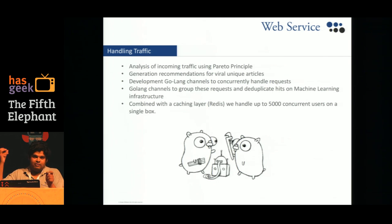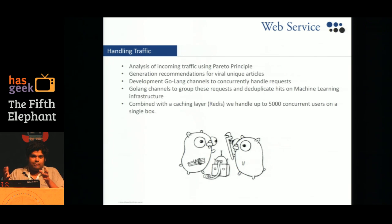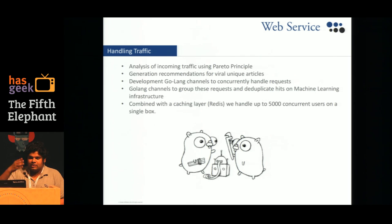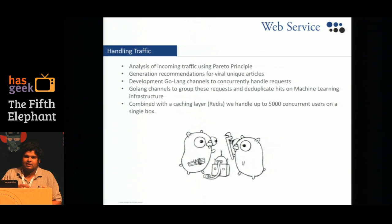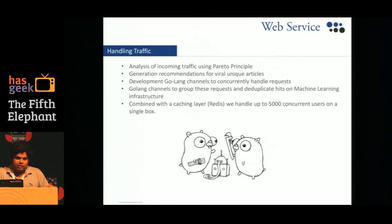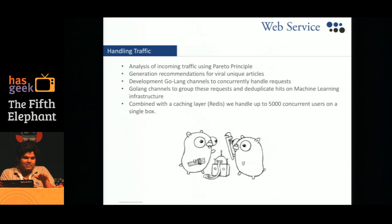With the infrastructure ready for querying, the main challenge was handling traffic. We started with a simple Python and Redis based setup, where when a document comes in we create recommendations, cache them, and keep returning the same recommendations. But whenever the publisher tweeted about an article, traffic was just insane and the Python server was overwhelmed.